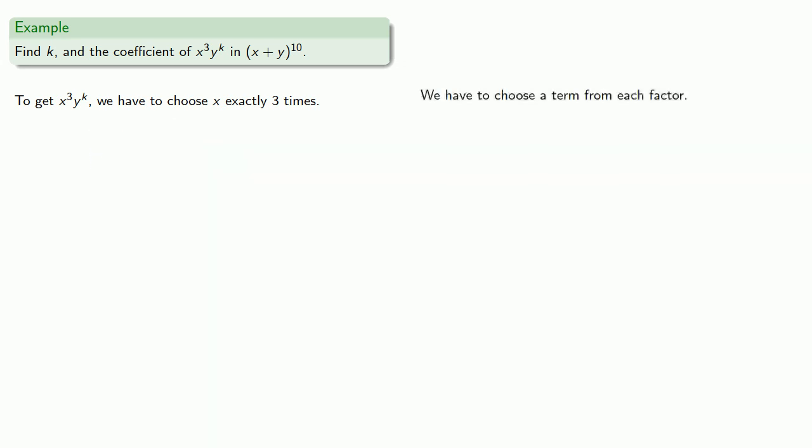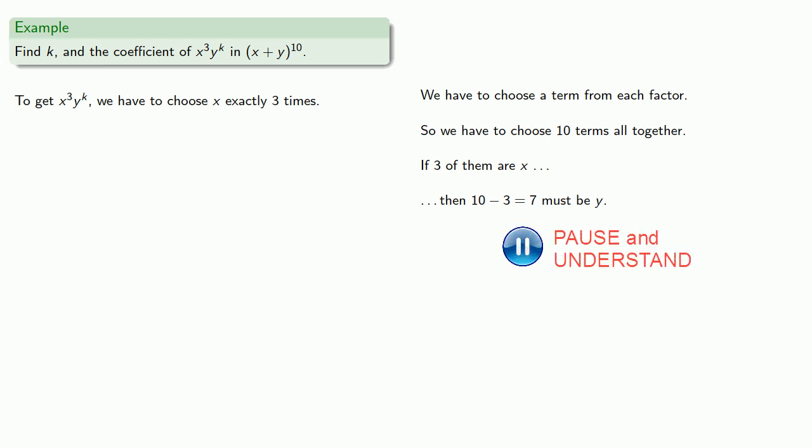And remember, we have to choose a term from each factor. And since there are ten factors, that's our tenth power, we have to choose ten terms altogether. So if three of them are x, then ten minus three, seven of them must be y. And so we have to choose y exactly seven times.